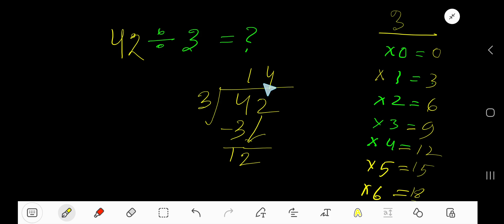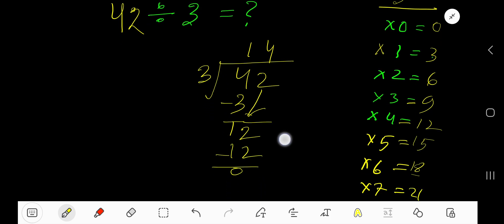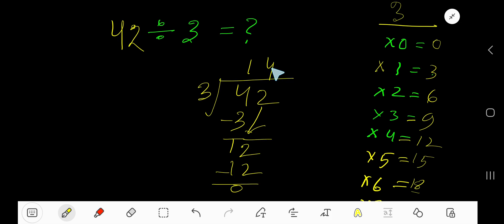4 times. 4 times 3 is 12. Subtract 0. So your answer is 14.